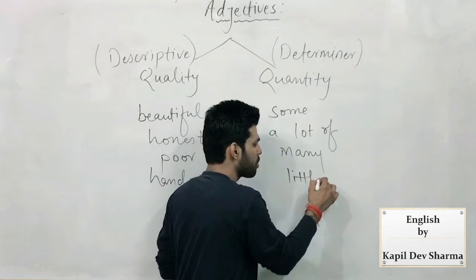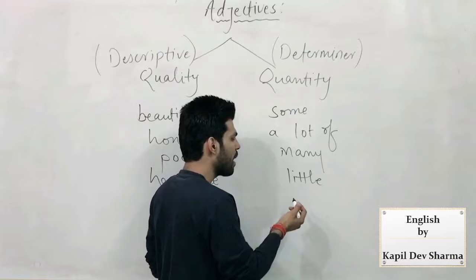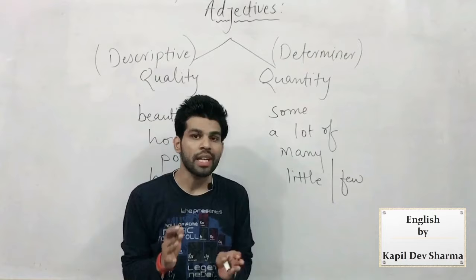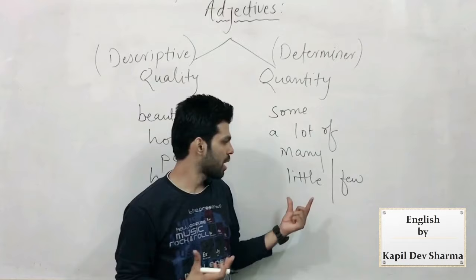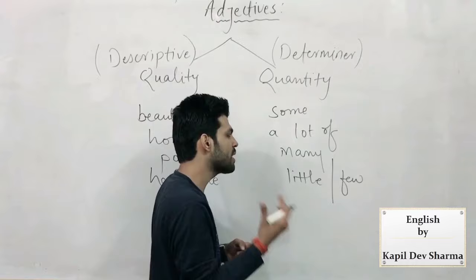ना के बराबर पानी है उस bottle में — little amount of water. 'Little' कहने से जब हम मात्रा दिखा पाते हैं — ना के बराबर — वो भी हमेशा quantity represent करती है। 'Few' भी use करते हैं — English के adjectives के most important fractions में से: use of little, a little, the little, और few, a few, the few — आपने जरूर पढ़ा होगा। Few people — 4-5 लोग थे — वो उनकी मात्रा दिखा पाएगा। इन्हें हमेशा quantity दिखाने के लिए adjective कहा जाता है।